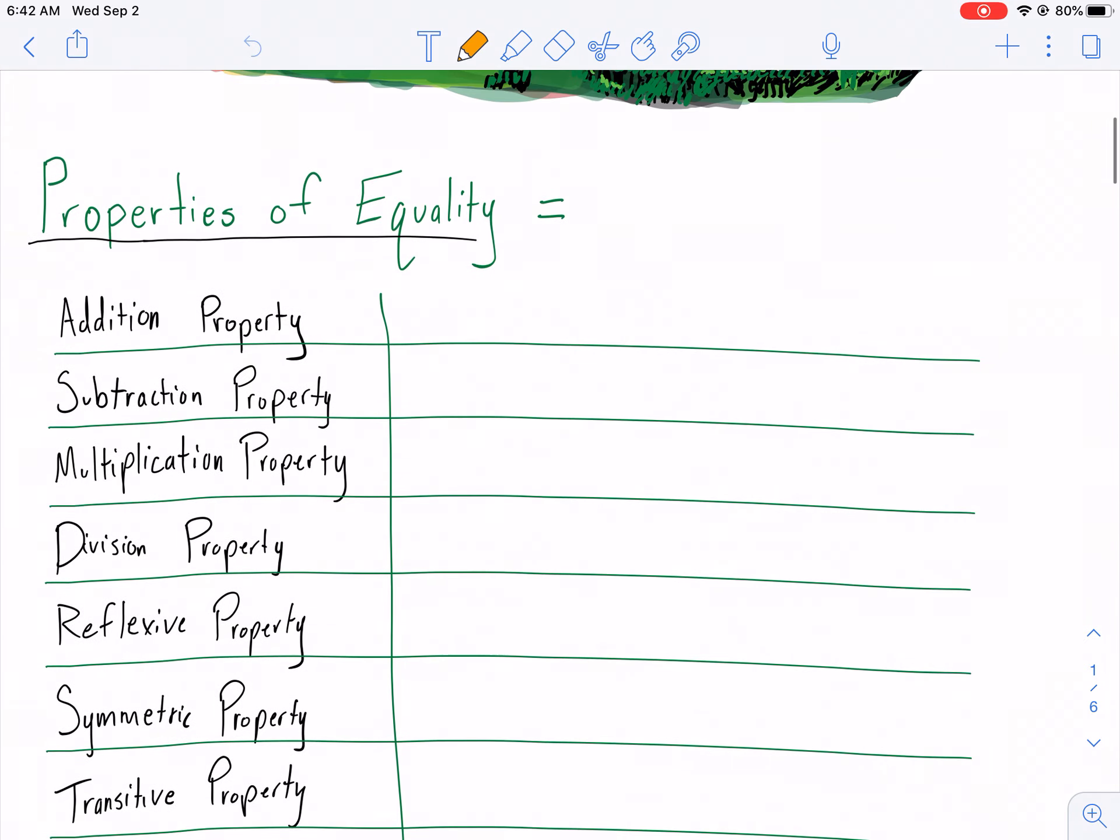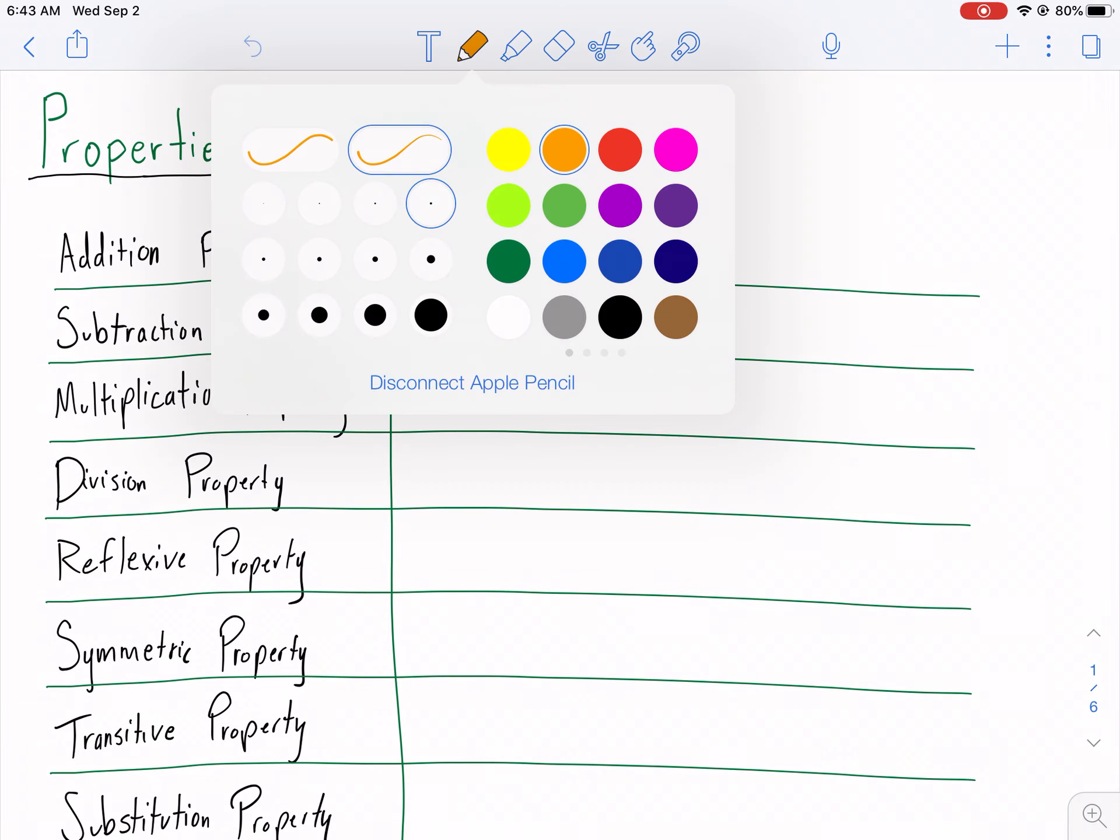What we have here is properties of equality and properties of congruence. These are kind of like your moves. This is your skill set. This is what you use to go from one point to another. But there's steps along the way. So each one of these would count as a step. And you'll know what I mean a little bit more in just a little bit.